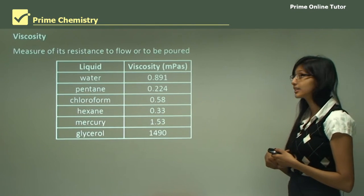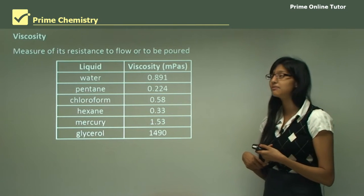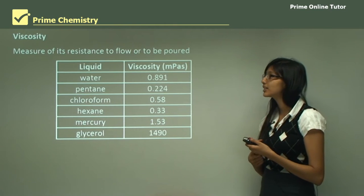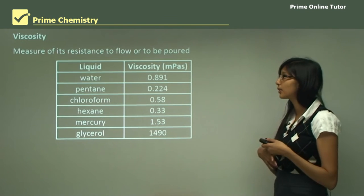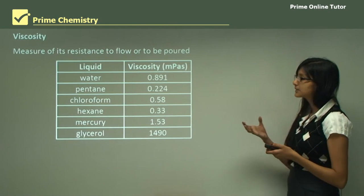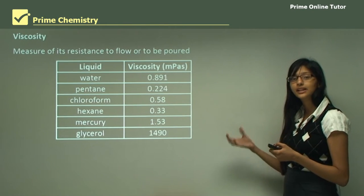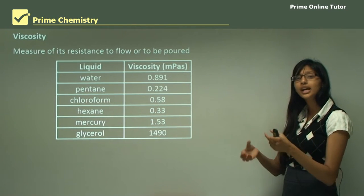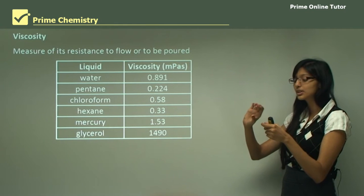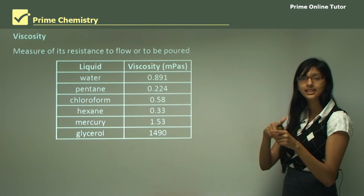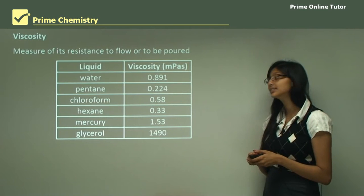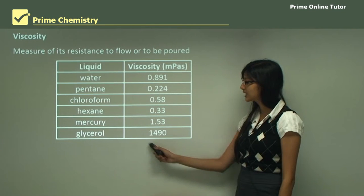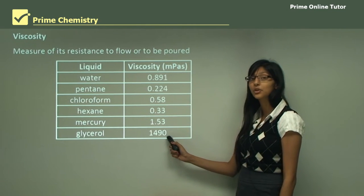Now let's look at another term: viscosity. Viscosity is the measure of a liquid's resistance to flow or to be poured. Substances that are less viscous will flow very easily. For example, if you try to pour water into a beaker it flows very easily, because water is not that viscous compared to glycerol, which has a viscosity of 1,490.